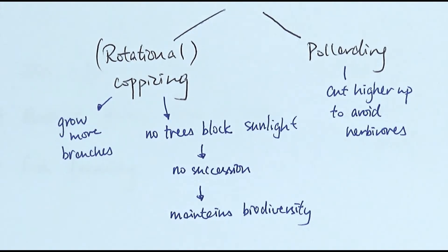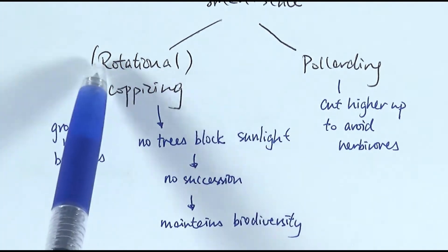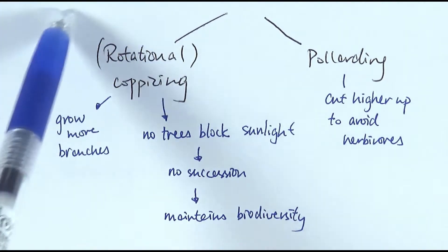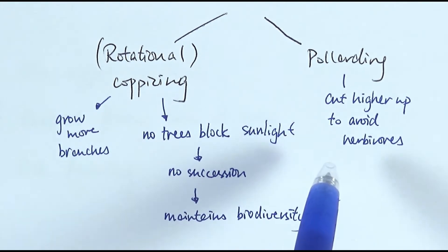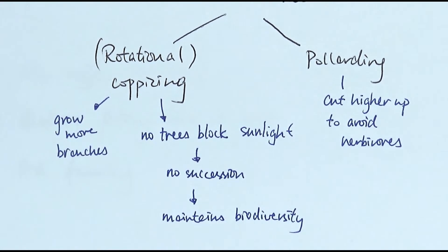We can also use rotational coppicing, which is even better. The idea is to divide a whole forest into different sections — say four sections. You finish coppicing one area, then move on to the next, allowing the already-coppiced trees time to regrow to an acceptable standard with enough branches before you harvest them again. It's a rotational approach to protect the trees and protect your source of timber.